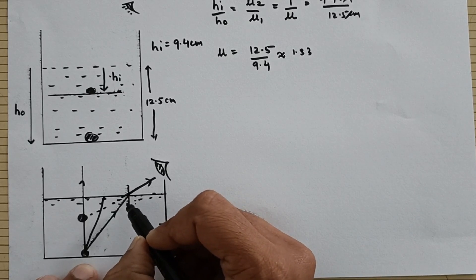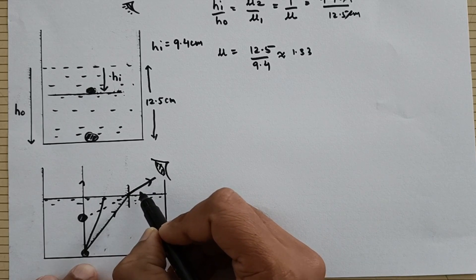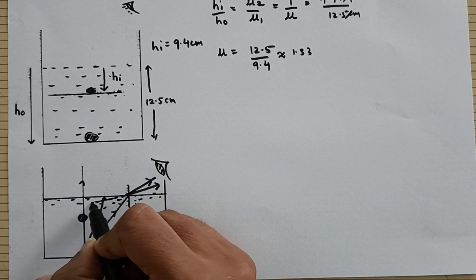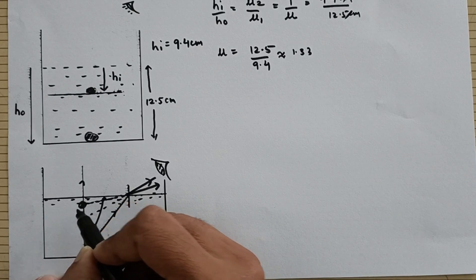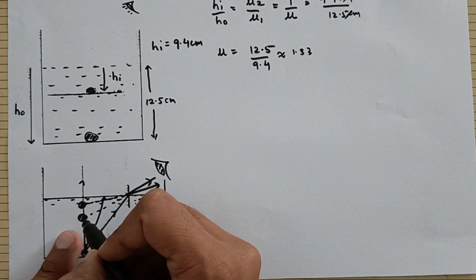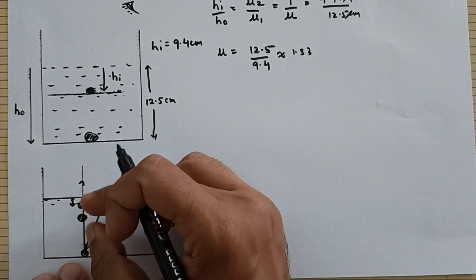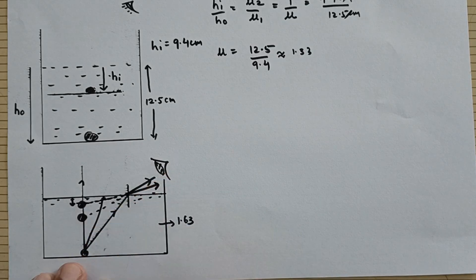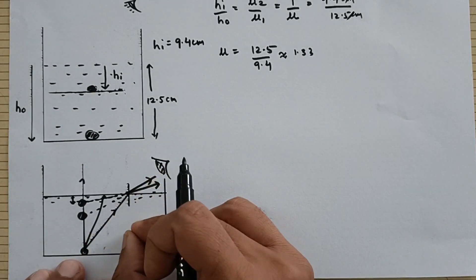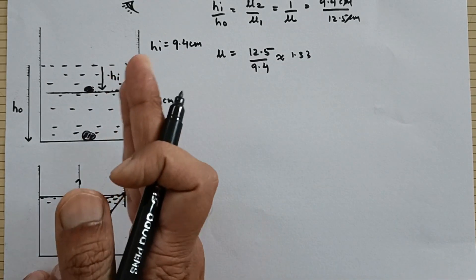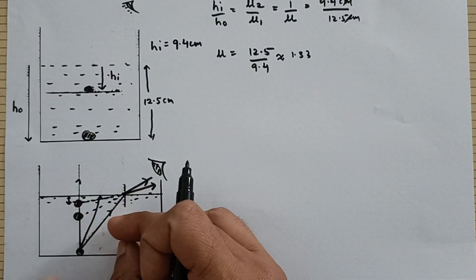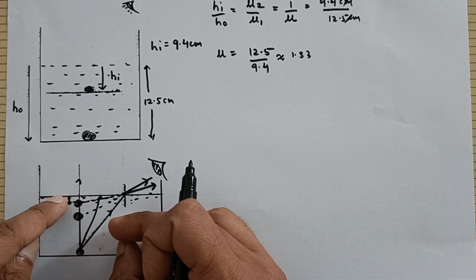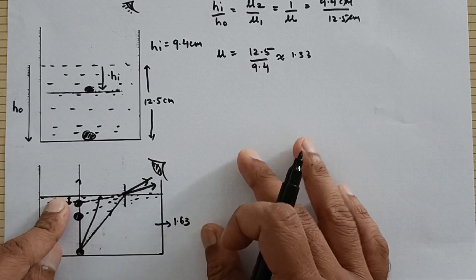Now suppose if you replace this water by a denser liquid then at the same angle of incidence the angle of refraction would increase which means the ray would bend like this and then you will be seeing the image comparatively up with respect to water. In that case the apparent depth in case of this liquid would even decrease because the denser the liquid more it is going to bend the ray so the more shifted the object is going to appear and at the lesser depth from the top.